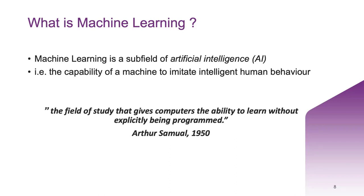Arthur Samuel described machine learning as the field of study that gives computers the ability to learn without explicitly being programmed to do so, and this definition still holds true today. Machine learning takes the approach of letting computers learn to program themselves through experience, meaning machines can recognize a visual scene, understand text written in natural language, or perform an action in the physical world. Machine learning is behind chatbots, predictive text, language translation apps, the shows Netflix suggests to you, and how your social media feeds are presented.